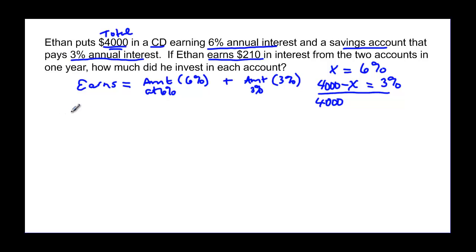So he earns $210. And that's going to be equal to 6% or 0.06 times the amount he invested, which we decided was x, plus 3%, the decimal going first, times the amount he put in there, which was 4,000 minus x.